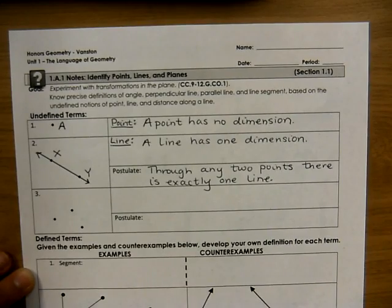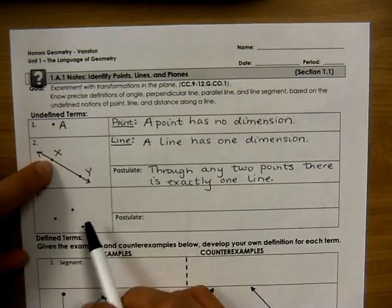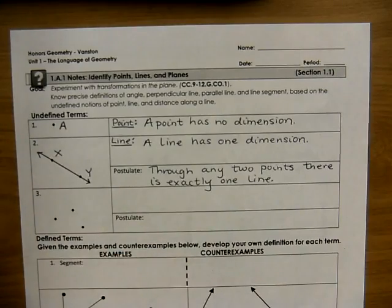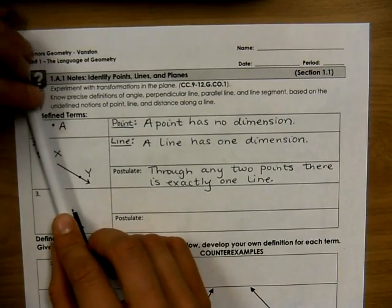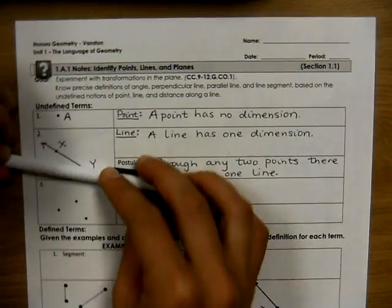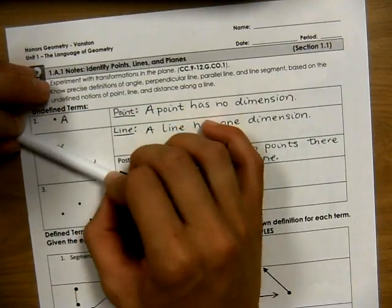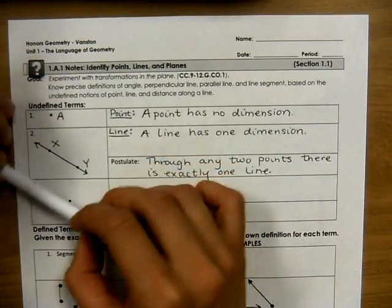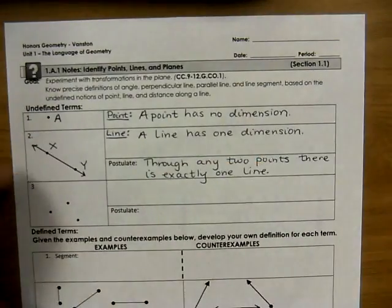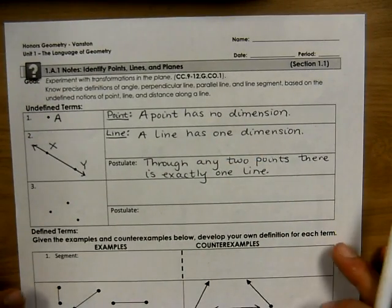And what we mean by this is that if I have these two points, there's only one line that will connect them. So if I try to draw a line here, here, here, the only line that will work that goes through both of them is this one.